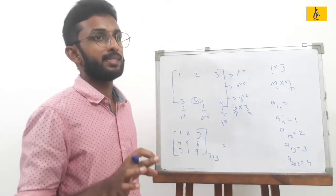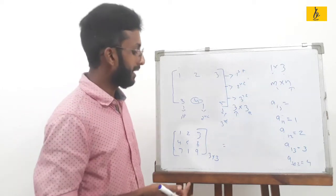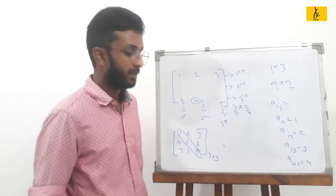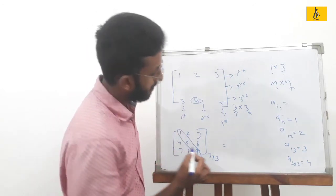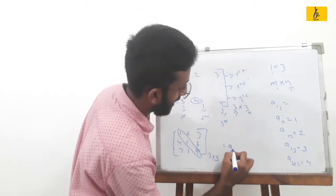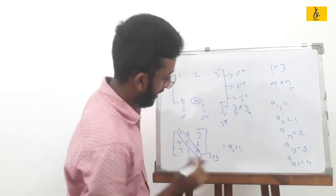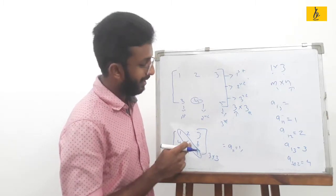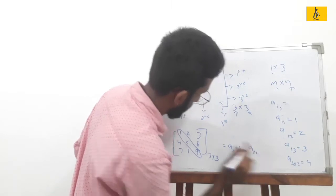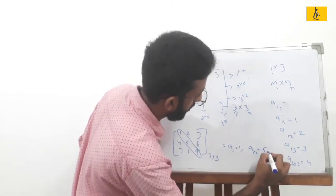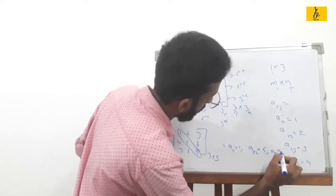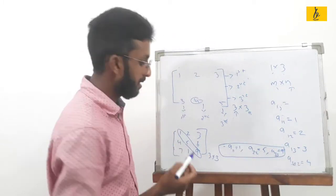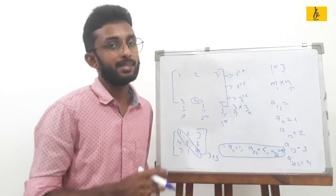Next, the diagonal matrix. What is the principal diagonal? The principal diagonal consists of elements A11, A22, A33. These three elements are called the diagonal elements or the principal diagonal elements of the matrix.